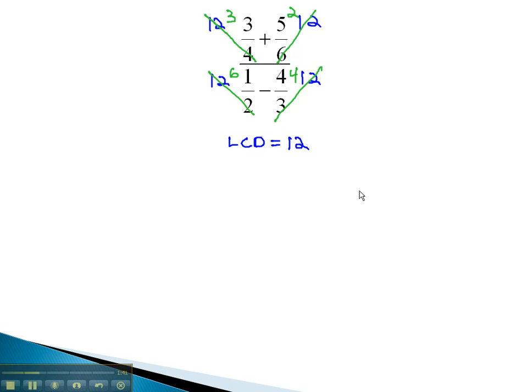Notice we have divided out the denominators of all the little fractions, and left is simple multiplication problems all the way across. 3 times 3 is 9, plus 5 times 2 is 10. Over 6 times 1 is 6, minus 4 times 4, which is 16.